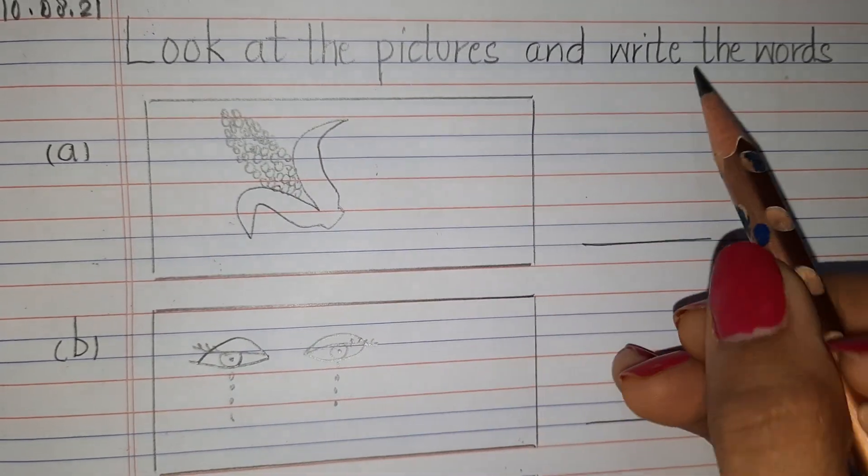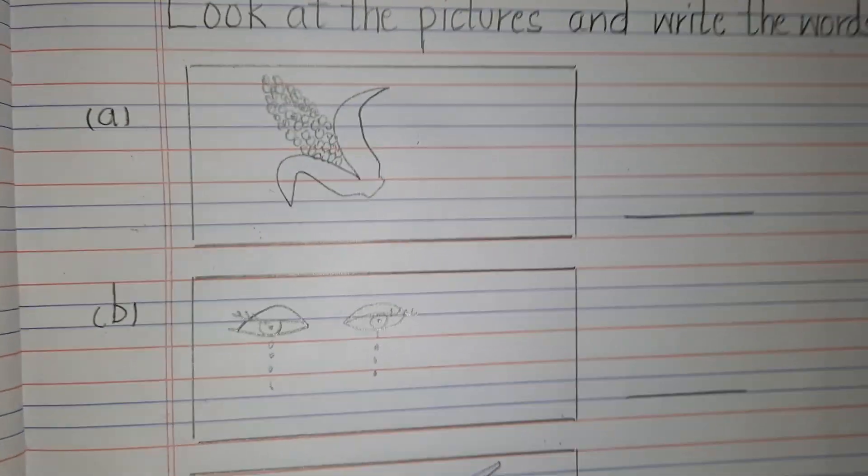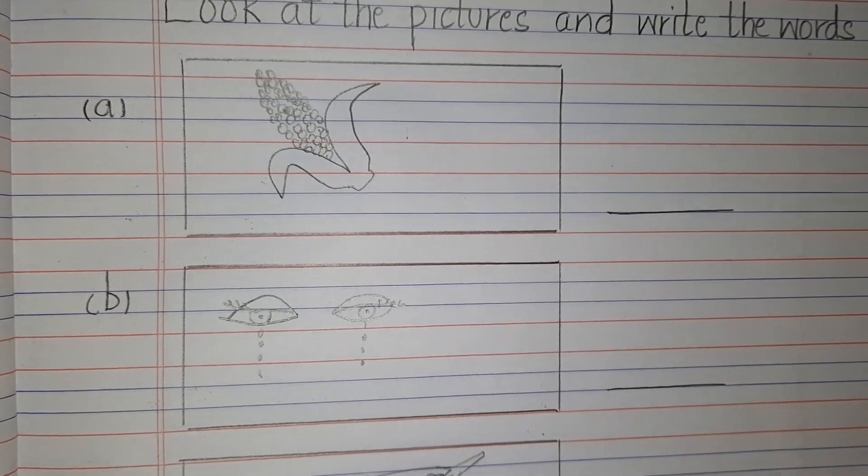Look at the pictures and write the words. Now over here you can see all these pictures. In the same way you will draw it from the PDF and then you are going to write the word in front of this.